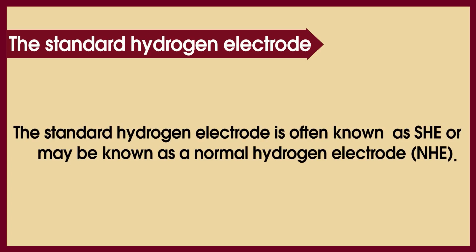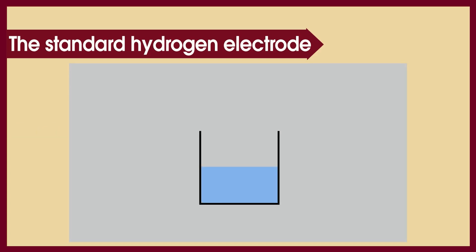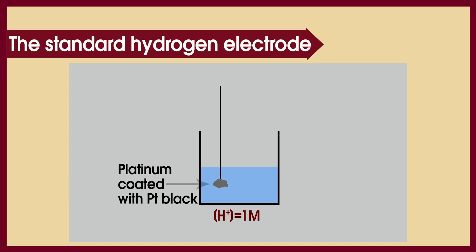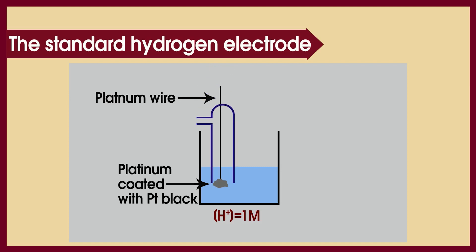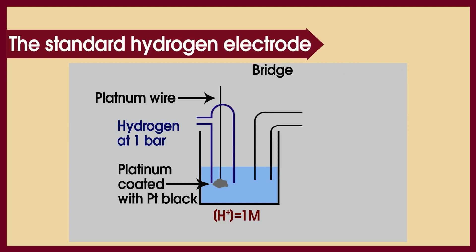The components of the standard hydrogen electrode: it is made of a beaker with a one molar solution of hydrogen protons, a wavy platinum block coated with black platinum to increase the surface area, a platinum wire, a glass tube for the insertion of hydrogen gas, and a salt bridge for neutralization of ions in the other part of the galvanic cell.